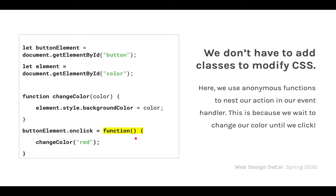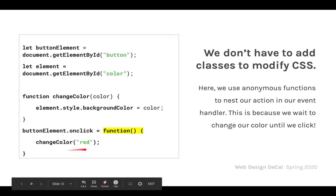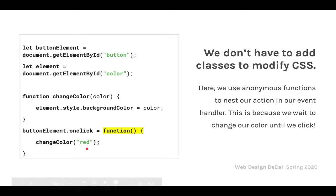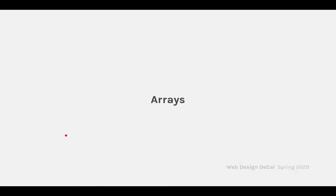There's also the difference between using an anonymous function versus a named function. We use an anonymous function here because we can write however much code we want inside it, and it will only be applied for that specific element when we click on it.